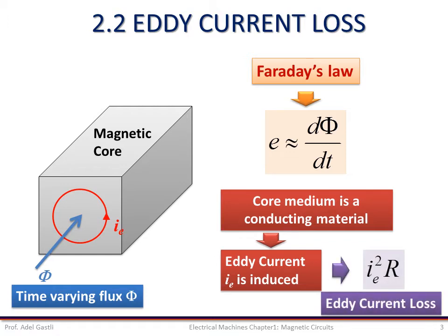Because this core material has a resistance, a power loss I²R, called eddy current loss, will be caused by the eddy current and will appear as heat in the core. The eddy current loss depends on the amount of eddy current induced in the core and the resistance of the core itself.